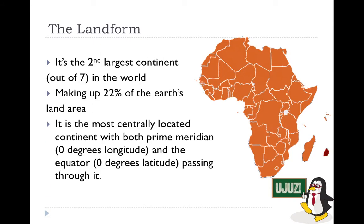Another important thing about Africa is that it is the most centrally located of all the continents, with the prime meridian and the equator passing through the continent — giving you zero degrees latitude and zero degrees longitude in Africa. It is also one of the hottest of all the continents.